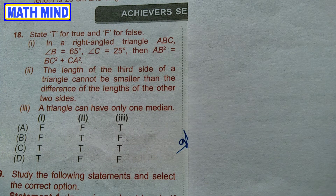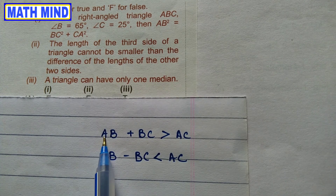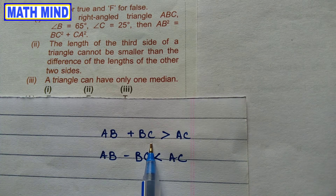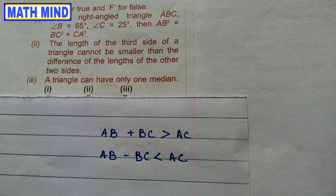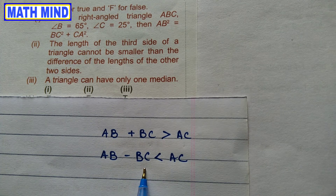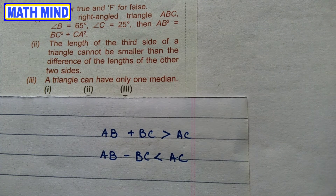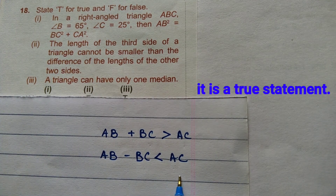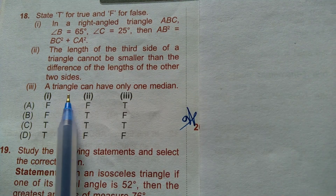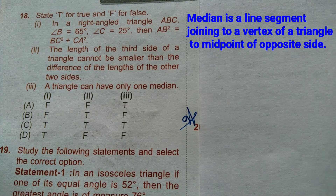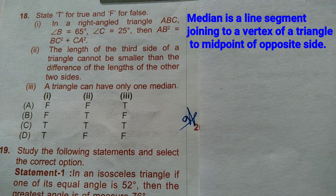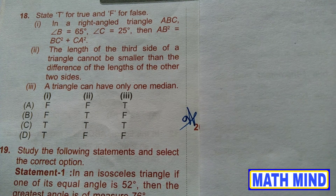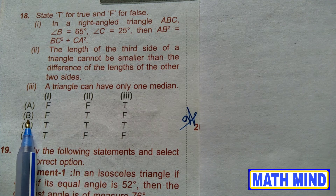Statement 2: The length of the third side of a triangle cannot be smaller than the difference of the lengths of the other two sides. We know the sum of two sides is always greater than the third side, and the difference of two sides is always smaller than the third side. Therefore the third side cannot be smaller than the difference — it is always greater. This is true. Statement 3: A triangle can have only one median. Since a triangle has three vertices and three sides, three medians can be drawn. This is false. Option B is correct: False, True, False.